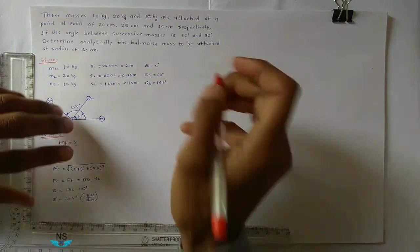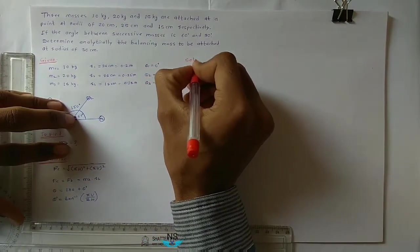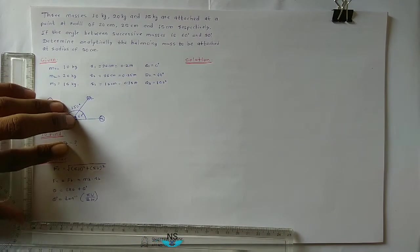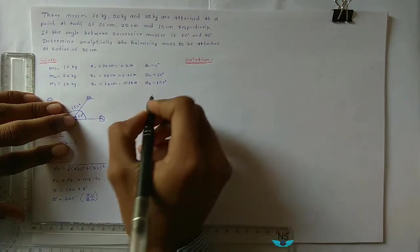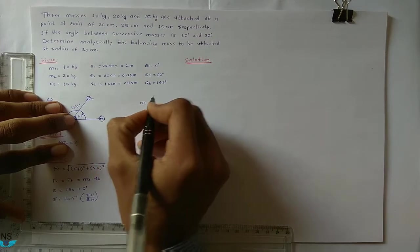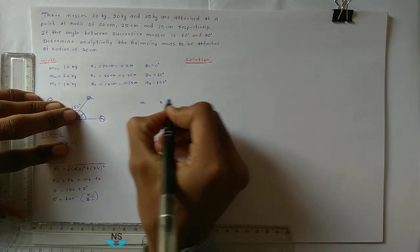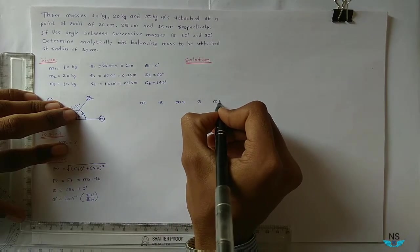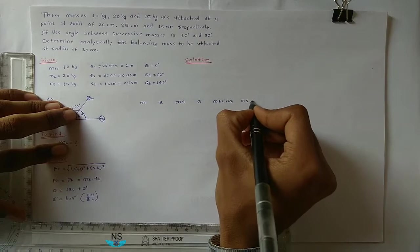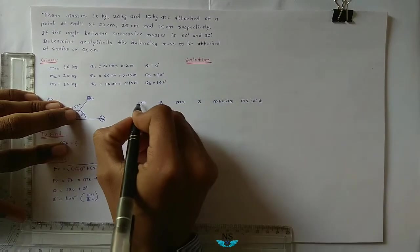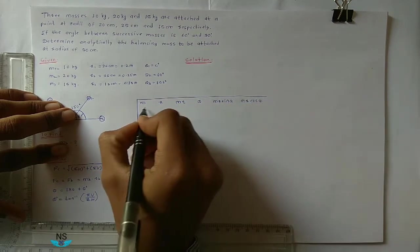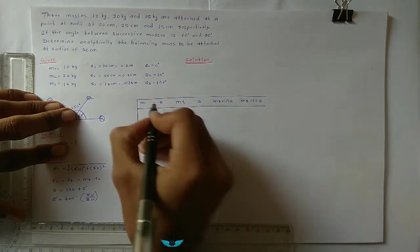Solution. Let us see how to solve it. Draw first one table. So draw here: M, R, M into R, theta, M R sin theta, M R cos theta. Draw this table.